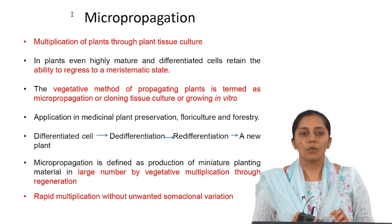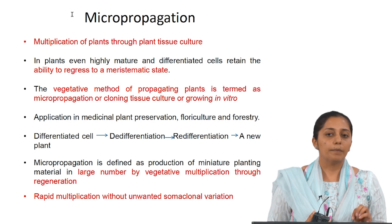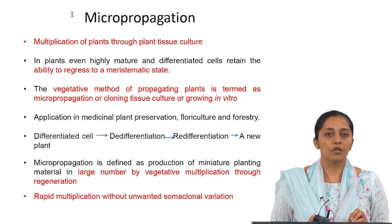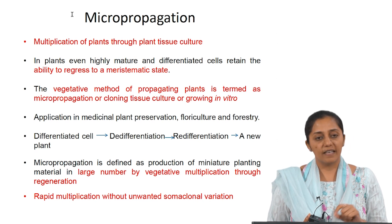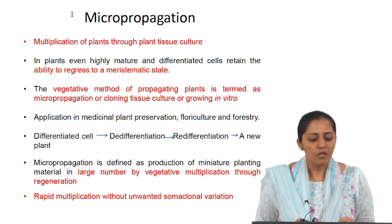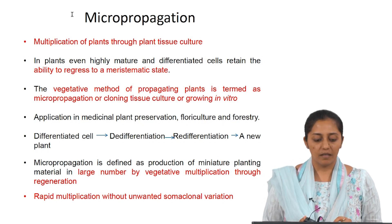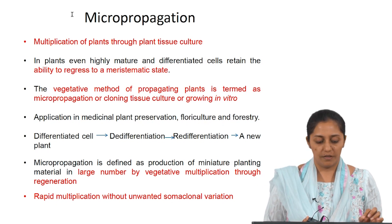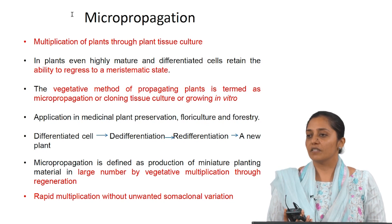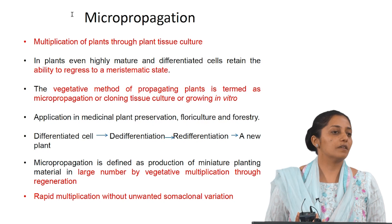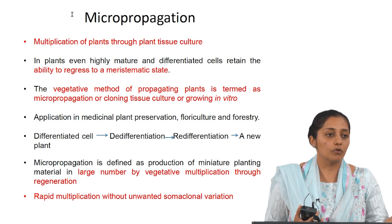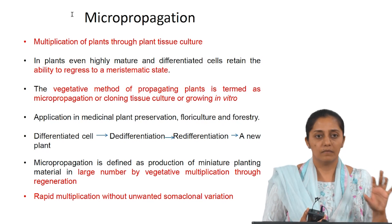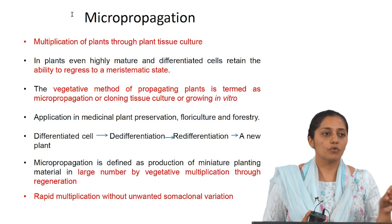Now talking about micropropagation — what is micropropagation? Micropropagation is the multiplication of plants through plant tissue culture. In plants, even highly mature and differentiated cells retain the ability to regress to a meristematic state. The vegetative method of propagating plants through tissue culture is termed micropropagation or clonal tissue culture. For example, in medicinal plants, if you need to preserve them, this can be useful — under in vitro conditions you can generate large amounts of plantlets of the same genetic makeup and then plant them.